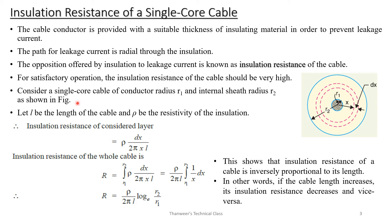Consider a single core cable with a conductor of radius R1 and an outer sheath radius of R2. Let L be the length of the cable and Rho be the resistivity of the insulation. The insulation resistance of a considered elemental layer is: dR = Rho multiplied by dx, divided by 2 pi x.